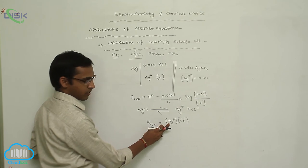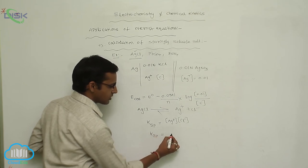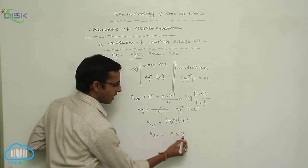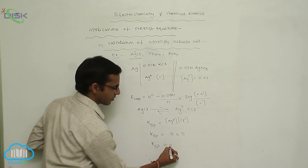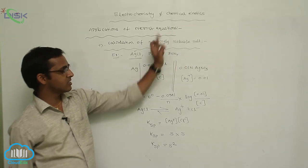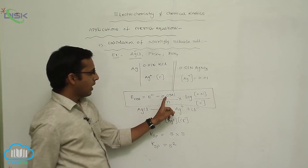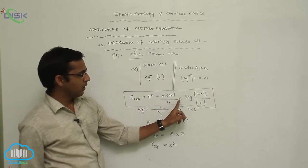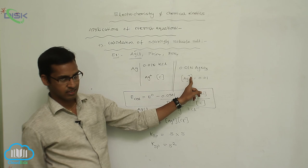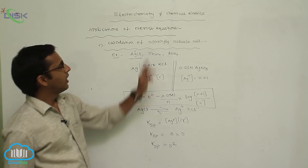Here the concentration of product Ag⁺ is S, the solubility. Cl⁻ concentration is also S, so Ksp = S². The calculation of sparingly soluble salt with the Nernst equation gives: E_cell = E° − (0.0591/N) · log([Ag⁺]_product / C). These are the applications of the Nernst equation.